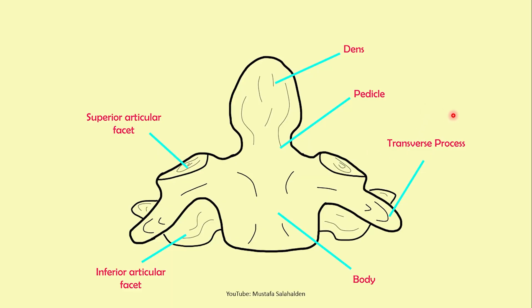Here is a drawing showing the C2 vertebrae, also known as the axis. It shows the odontoid process, which is our topic today, as well as the pedicle, transverse process, vertebral body, superior articular facet, and inferior articular facet.